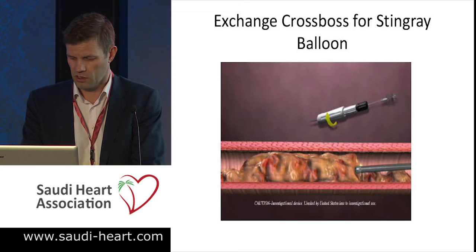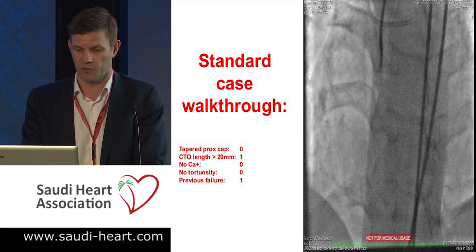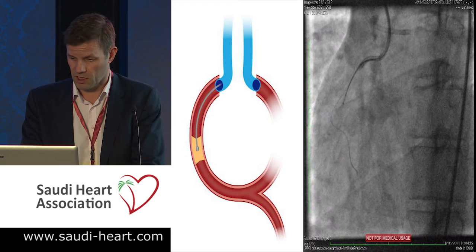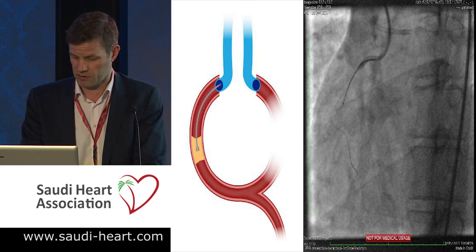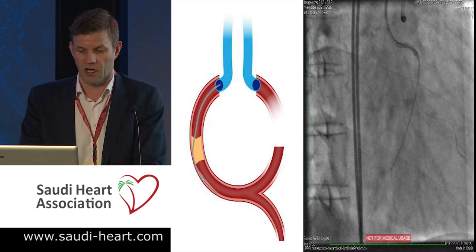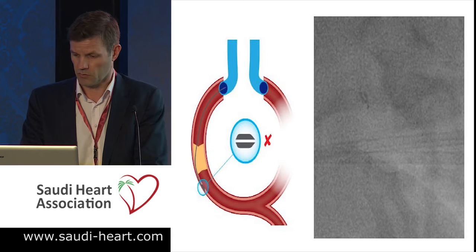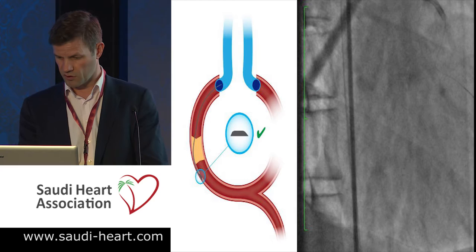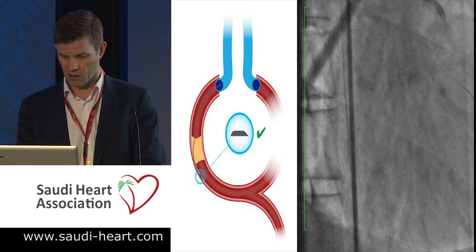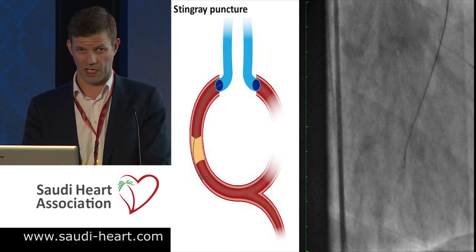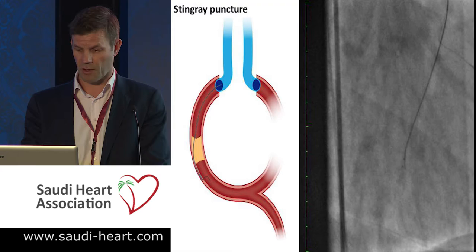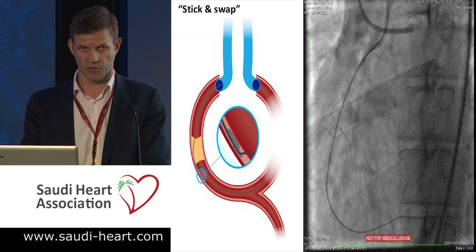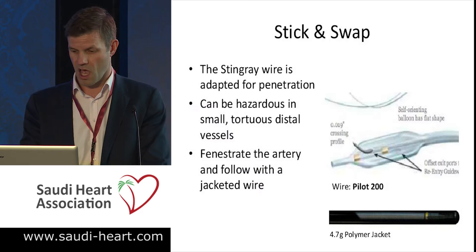I'll walk through a standard case. This was a JCTO 2 — a relatively simple, straightforward case, but it had been failed before. It's a long lesion. We bring the CrossBoss down with no wire and spin it in the sub-intimal space, making sure it's dancing with the vessel, within the architecture. We inflate our Stingray balloon, ensuring the two balloons are aligned with the exit port dots. We inject from the contralateral side to show which side the vessel is — it's to the right of the Stingray. We bring our Stingray wire down, puncture into that, then swap to a Pilot 200 to follow the track created, and complete the case.